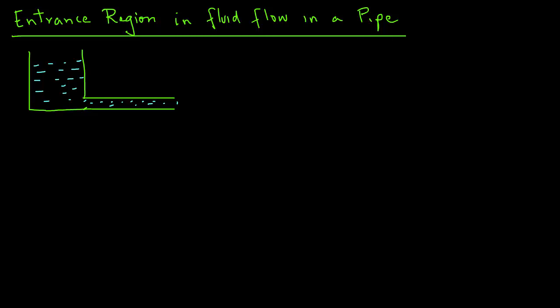Let's examine what's happening to the velocity of the fluid as it begins to move into this pipe. Right at the entrance, the velocity of the fluid is going to be fairly constant along the cross section of the pipe.